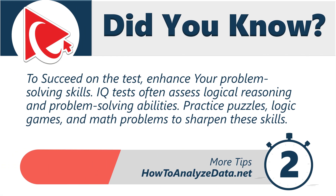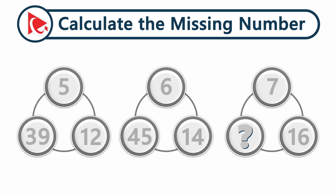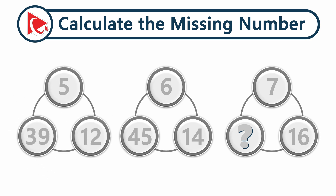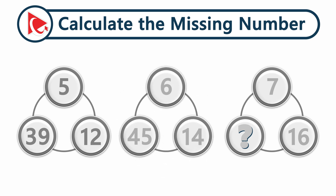You are presented with three cool-looking shapes — let's call them combo circles. Each shape has three digits inside. The first shape has numbers 5, 12, and 39. The second shape has numbers 6, 14, and 45.